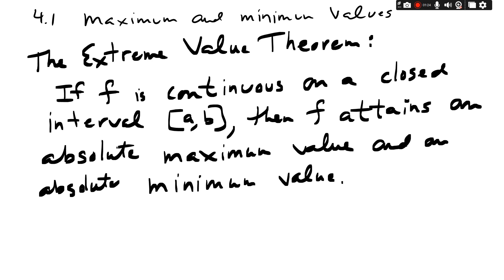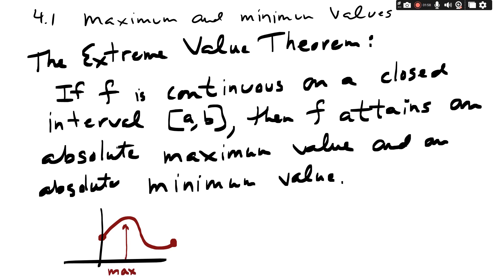This will be important through the rest of the chapter and culminates in section 4.7. Let me do a quick visual: my graph starts at a on the left and ends at b on the right. Somewhere in this process there has to be a maximum value and there has to be a minimum value — there's no other way around it.